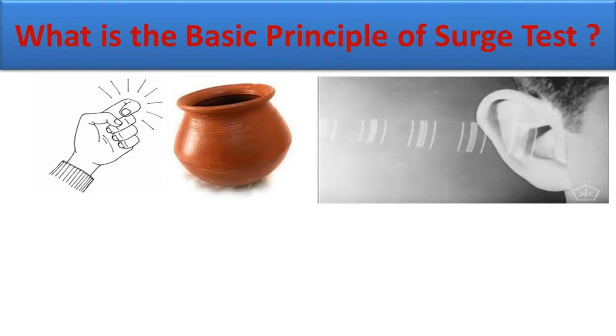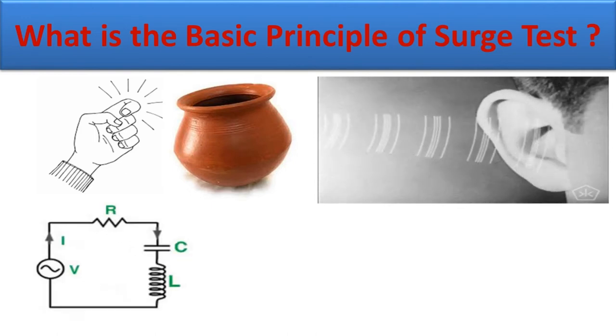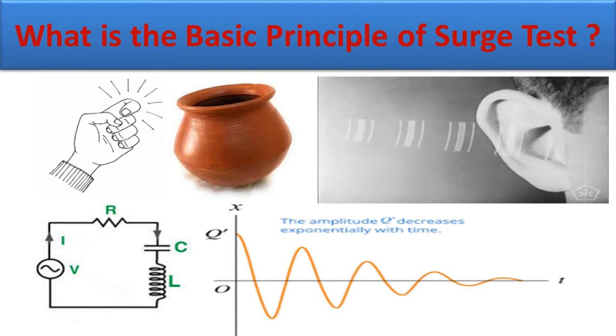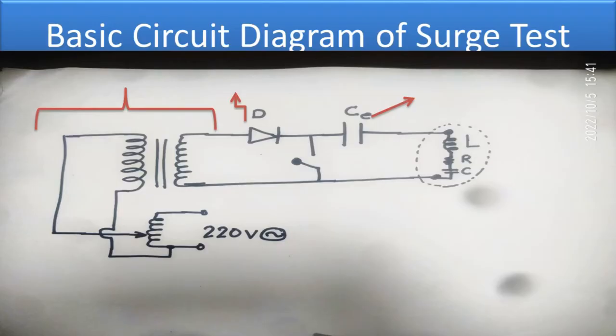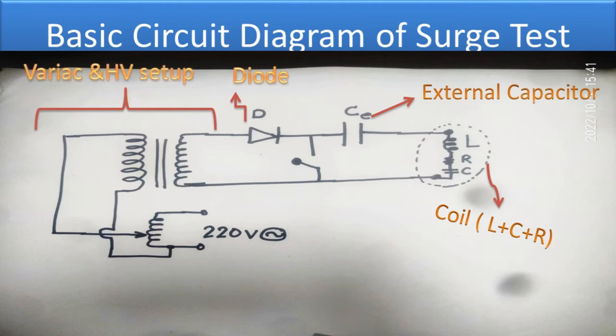The method of testing of coil in surge test machine is based on the principle of tank circuit, i.e., based on LCR circuit. The surge test machine causes damped oscillation in coil and displays and records it on computer screen and database respectively. The basic electrical circuit diagram is like this and this is the coil equivalent circuit which is to be tested, and this coil has its own inductance L, resistance R and capacitance C, and this is external capacitor CE, this is the diode, and this is HV setup with Variac.